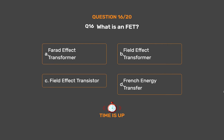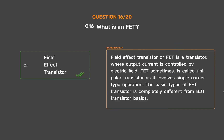The correct answer is Option C: Field Effect Transistor. A Field Effect Transistor, or FET, is a transistor where output current is controlled by electric field. FET is sometimes called a unipolar transistor as it involves single carrier type operation. The basic types of FET transistor are completely different from BJT transistor basics.